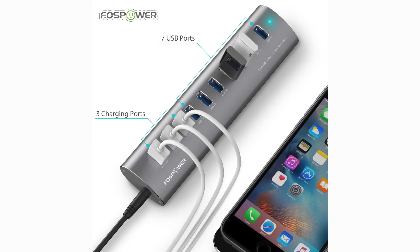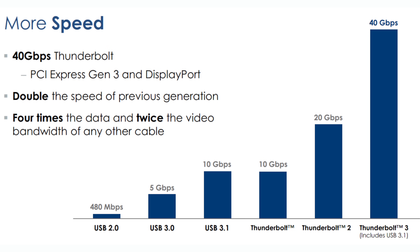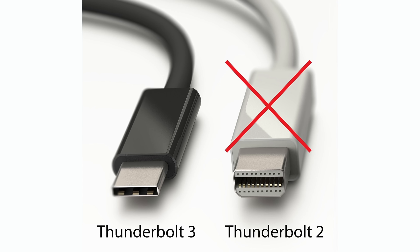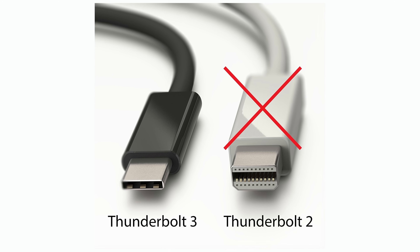Now let's bring Thunderbolt into the equation. Where USB uses a hub and spoke topology for multiple devices, Thunderbolt uses a chain up to 7 devices deep. Thunderbolt 3 arrived as a successor to Thunderbolt 2, doubling its predecessor at 40 gigabits per second, and ditching the mini DisplayPort connection type in favor of USB Type-C.